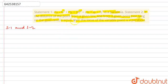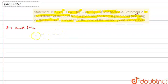First, let us look at Statement 2, which states that if the distance of a point from a given line and from a given point — that point not lying on the given line — is equal, then the locus of the variable point is a parabola. This is correct because it is the definition of a parabola itself.